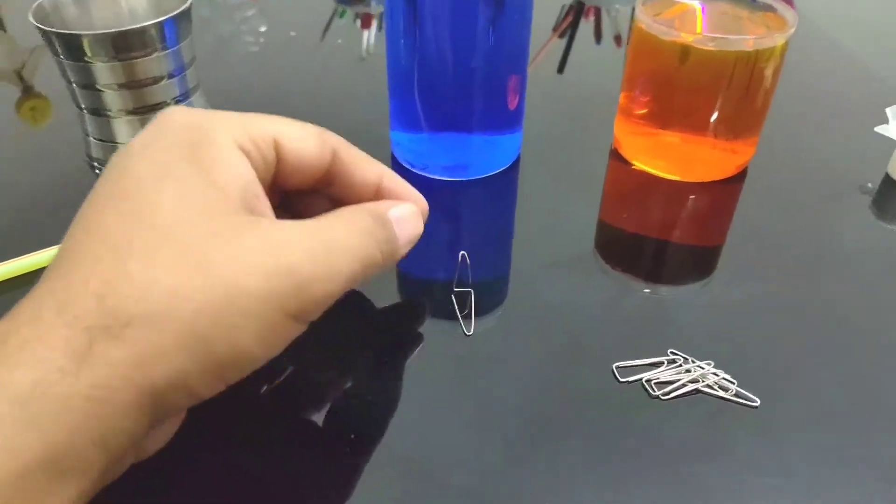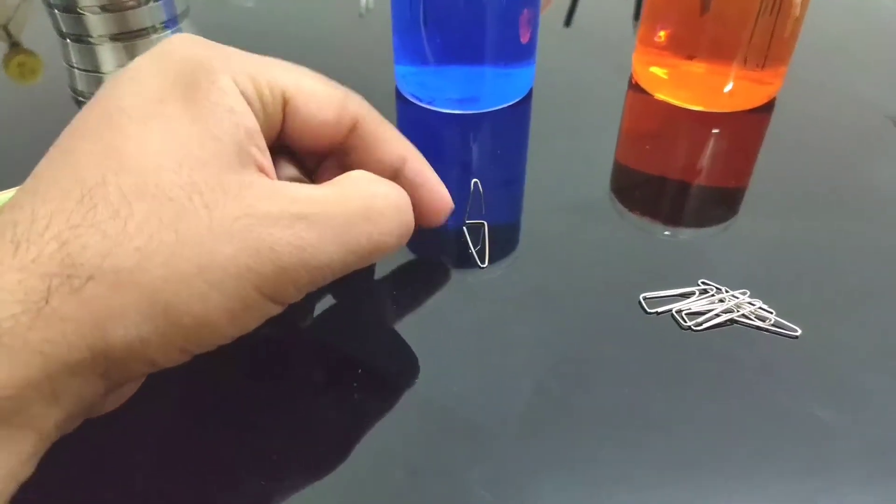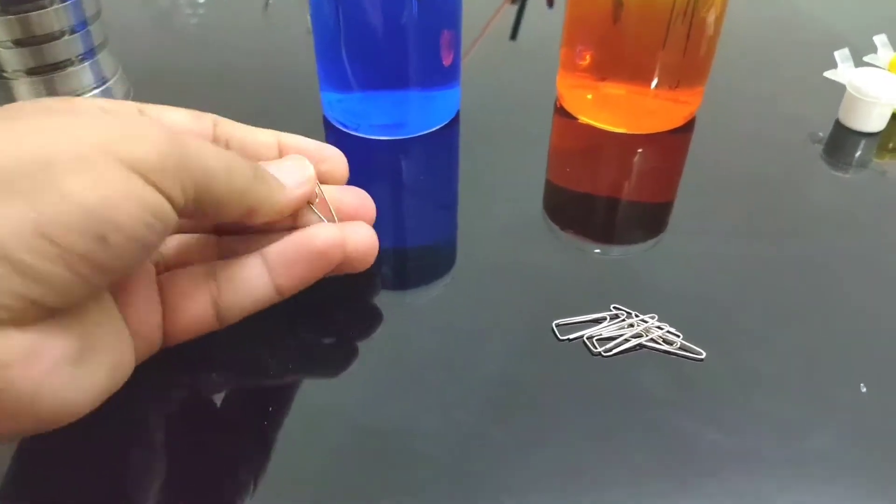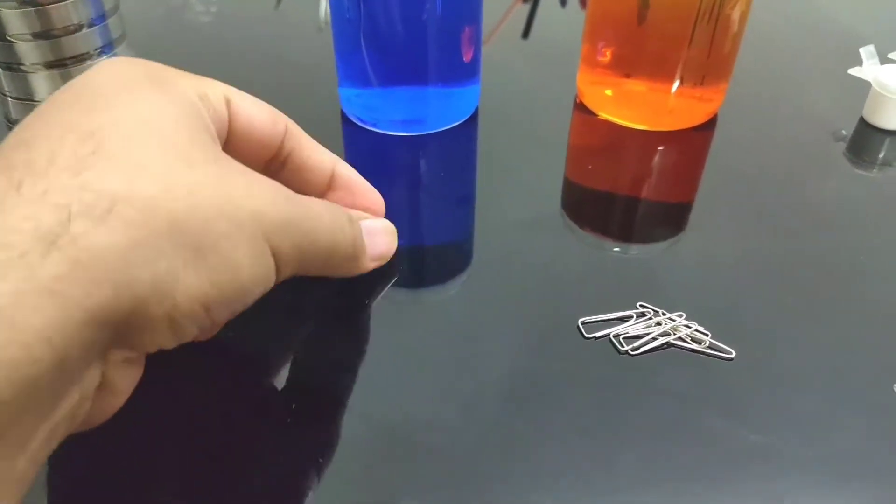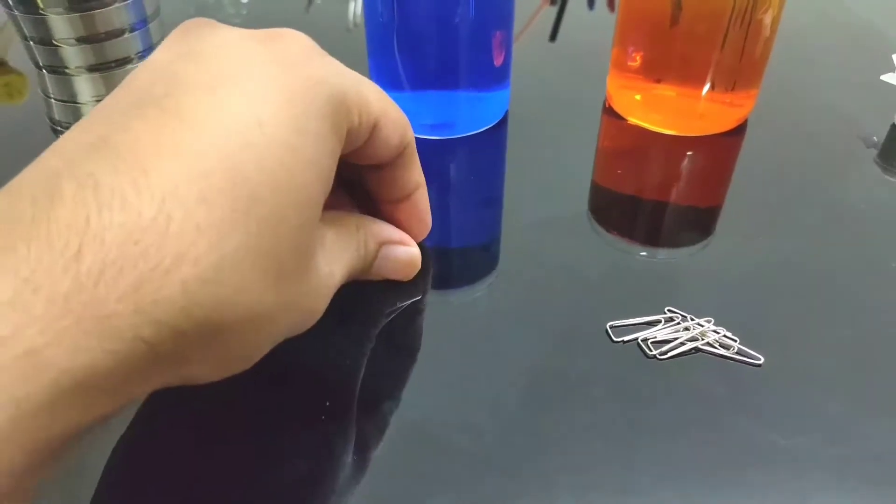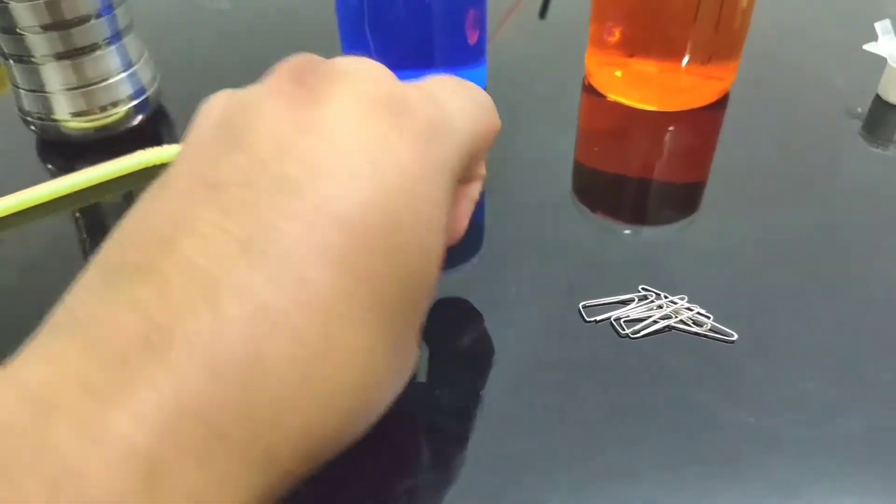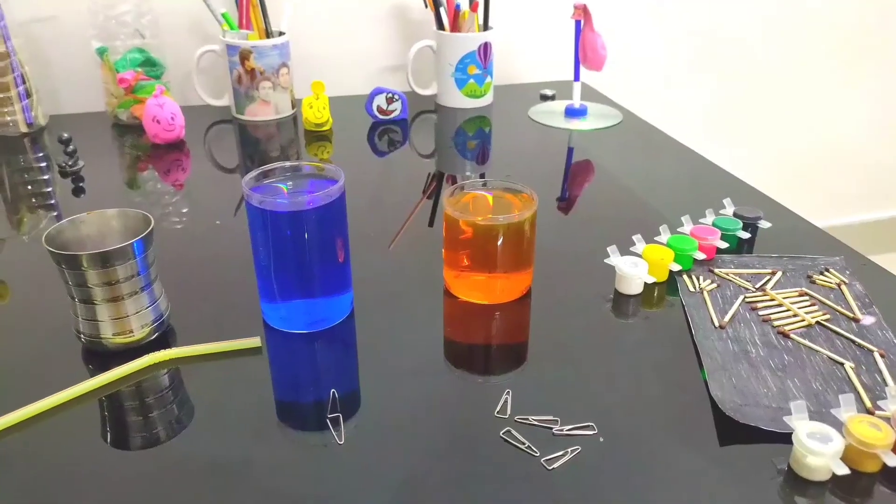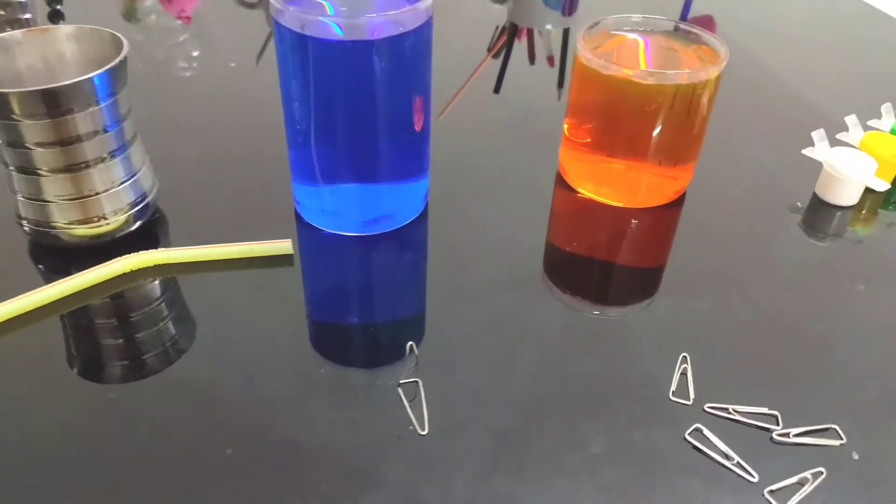This is very simple. The paper clip is normally folded in a certain way. What you have to do is take the center part and bend it vertically upward, so it looks something like this. Basically, we have to place the paper clip on this mechanism that we've made.